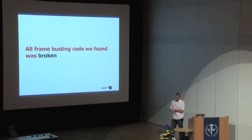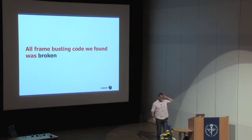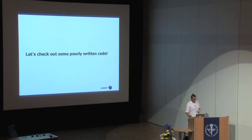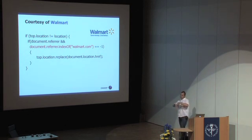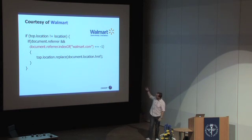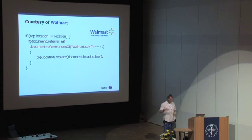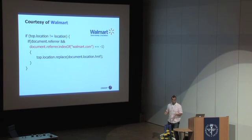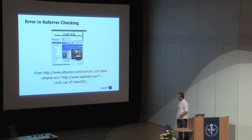Sadly, all the frame-busting code we found was broken. The best one was actually Twitter — I'll show you how to break that. First, some site-specific poorly written code. This is courtesy of Walmart: they do `if top.location !== location`, then check the referrer with `document.referrer.indexOf('walmart.com') === -1`. What's terribly broken about this? There are several ways of getting 'walmart.com' into your URL that you're framing from. Very, very broken.